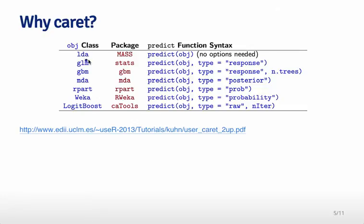As one example, consider this class of different prediction algorithms from linear discriminant analysis down to boosting. For each algorithm, you can imagine creating an object called OBJ in R. That object will have a different class, say linear discriminant analysis or GLM. For each object, when we apply the predict function, we have to pass slightly different parameters to get the prediction. For example, from the GLM package we have to say type equals response to get the prediction.